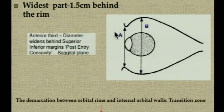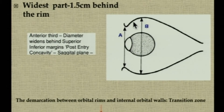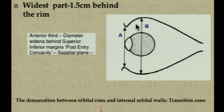An important point: the widest area of the orbital cavity is just 1.5 centimeters behind the rim. This is well appreciated in the sagittal plane and is also called the post-entry concavity. This is the transition zone where the thick orbital rim bones transit into thin orbital walls.